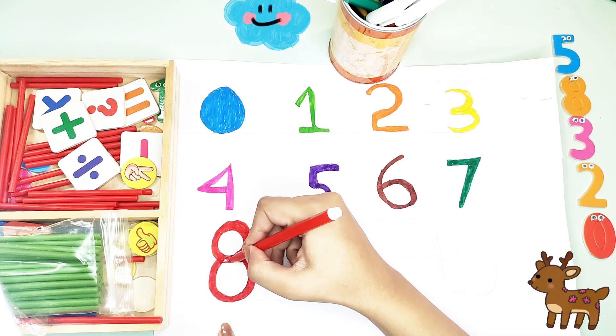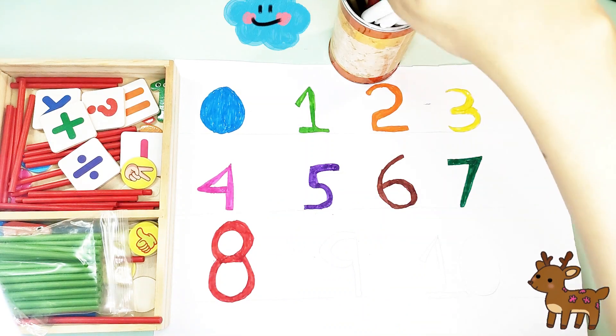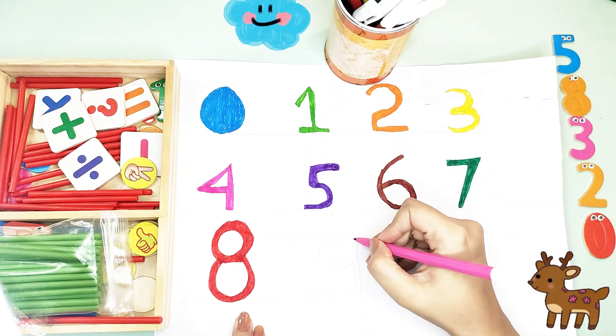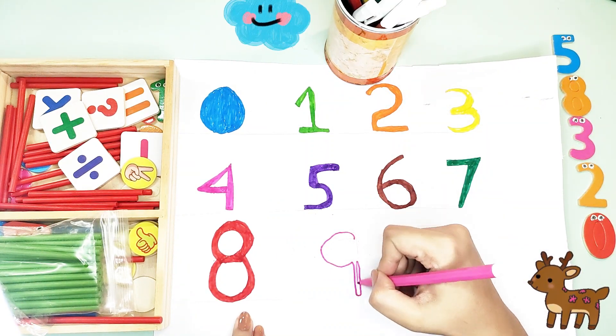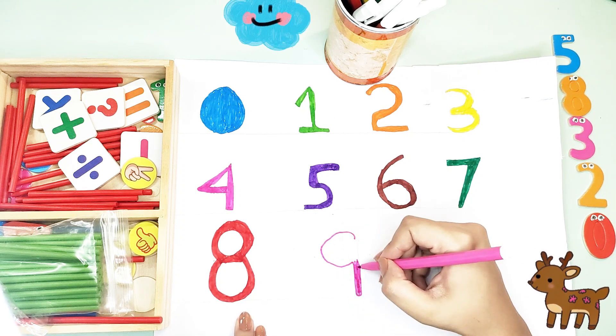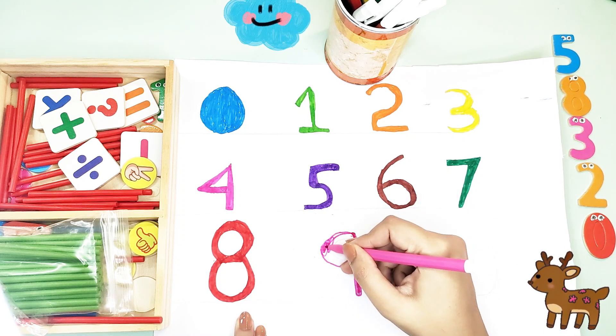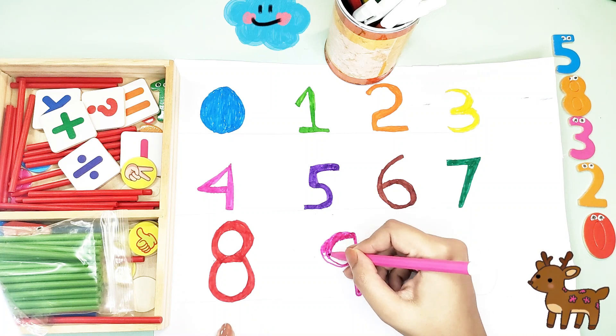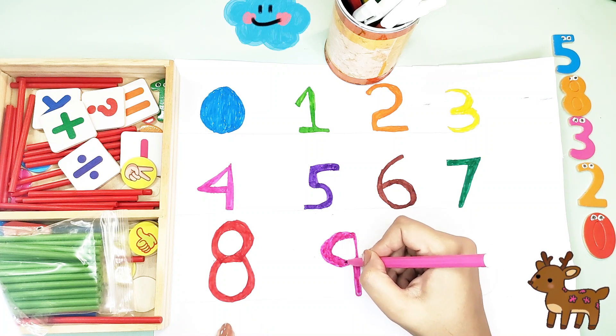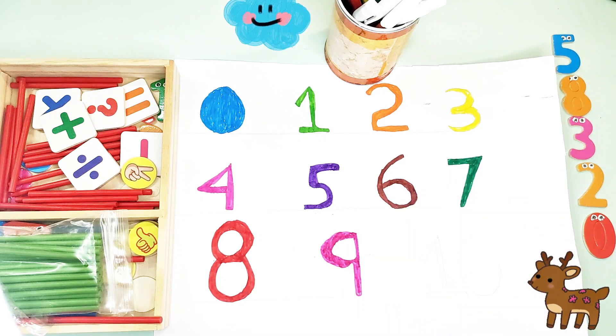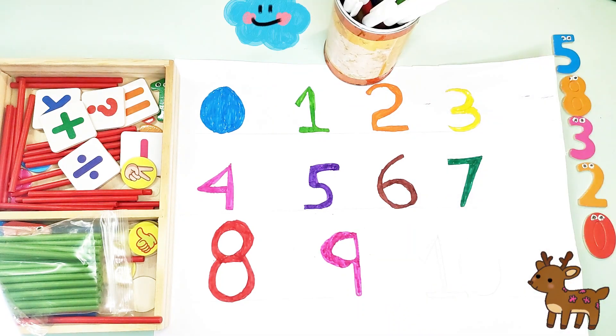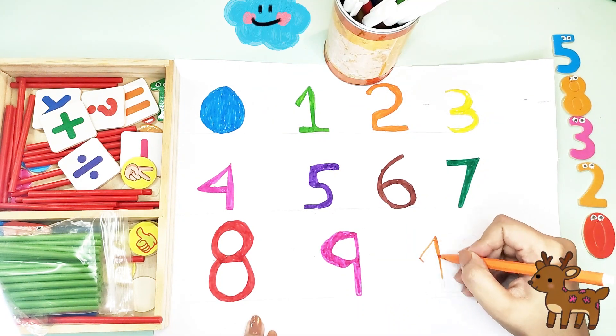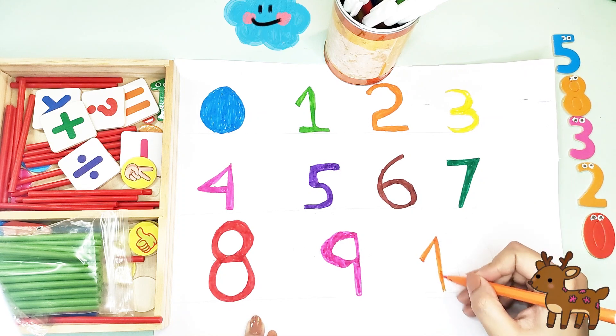After writing down number eight, I am going to put pink color once again in number nine. Super duper easy, super duper fun activity. Try this at your home. And please subscribe my channel and like the video. Thank you so much.